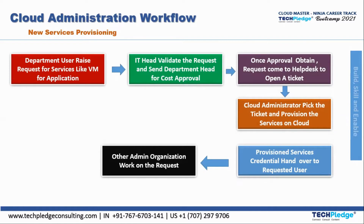The first thing that comes into picture is that the department user will raise a request for a service, like a VM for an application. The IT head, as you have seen in the hierarchy, will validate the request and send it to the department head for cost approval. Validation is very important — whether the request is needed as per the requirement.